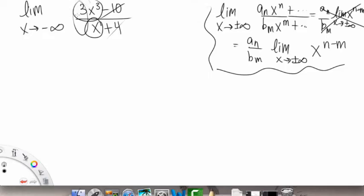Alright, so our leading terms are 3x³ and an x. And the leading coefficients are then 3 and 1. So we're going to write that 3, which is like our aₙ here, and then over 1. And then the limit as x goes to negative infinity of x^(3-1).